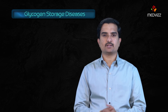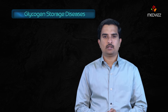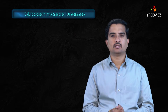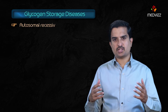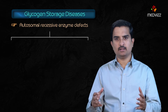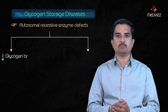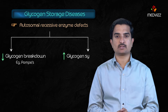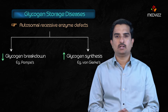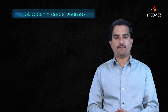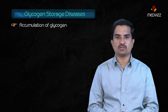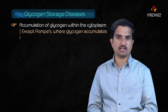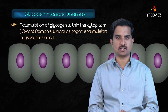Glycogen storage diseases — the glycogenoses — are autosomal recessive enzyme defects that result in either decreased glycogen breakdown (as in Pompe's) or increased glycogen synthesis (like Von Gierke's). This ultimately leads to accumulation of glycogen within the cytoplasm, except in Pompe's where glycogen accumulates in the lysosomes of cells.